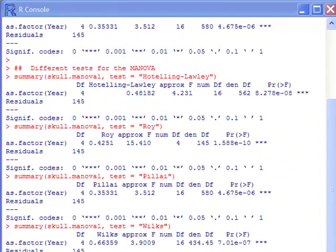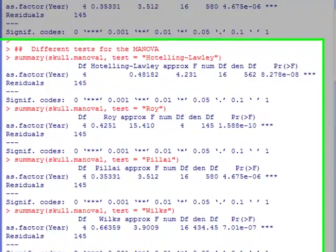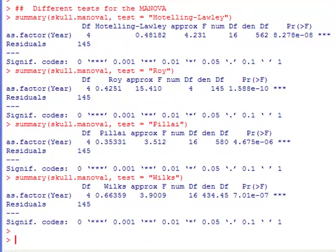And okay so we can see that here are each of these different tests. And if you look at the P values they pretty much agree with each other. All of them would say that the skull shapes are differing across the time.